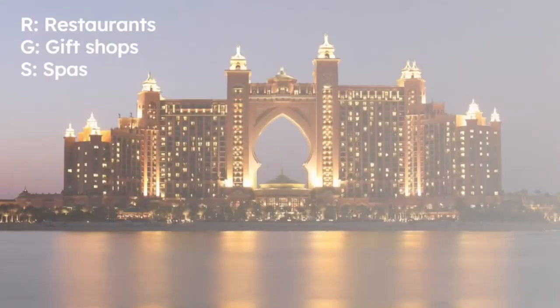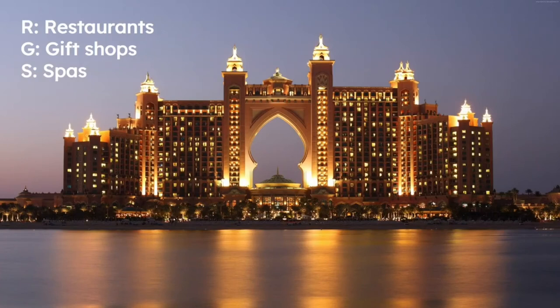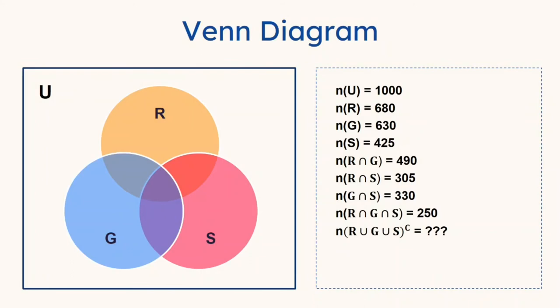Now the question is, how many guests staying at your property did not make any purchases at any of these three outlets? Before we go into the Venn diagram, I would like to note that in this example, I'm going to use R for restaurants, G for gift shops, and S for spas. Here's how the Venn diagram might look like. Your N of U, your universe, is 1000. And R for restaurants is 680. And G for gift shops, 630. And S for spas is 425. And R intersection G is 490. And R intersection S is 305. And G intersection S is 330. And finally, N of R intersection G intersection S, that's the one in the middle, is 250.